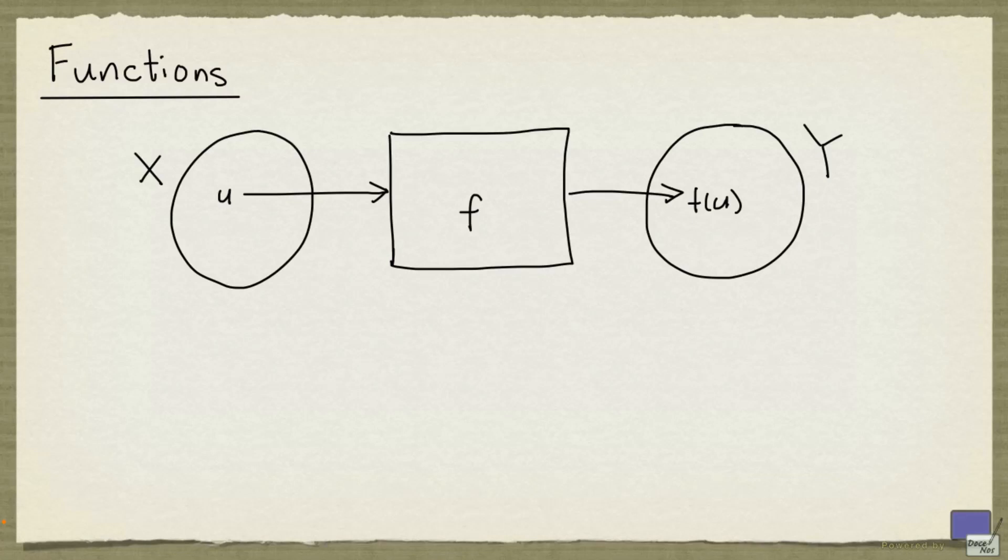A function can be viewed as a black box accepting an input and returning an output. The picture here represents that view. Say you have an element u from some set X, and we take that as the input to the function f, and it returns f(u), an element in some set Y.